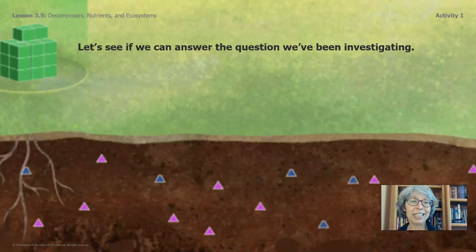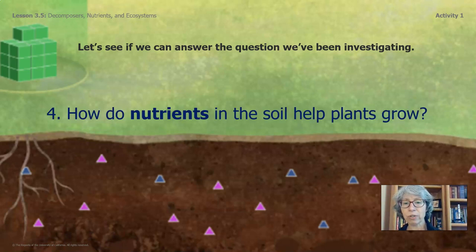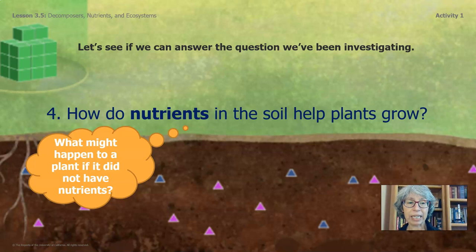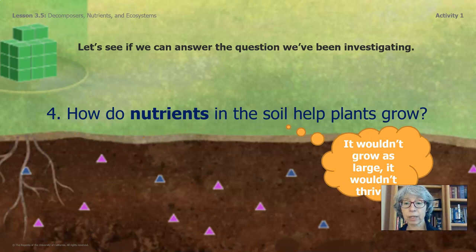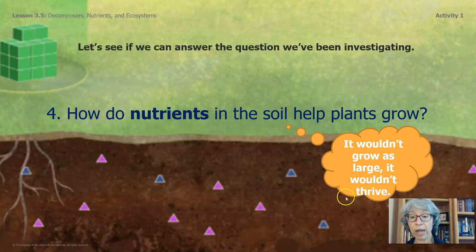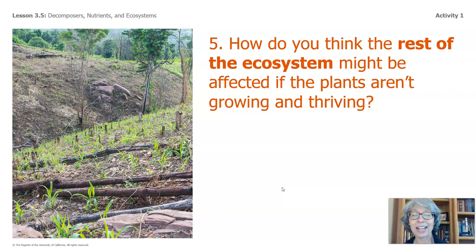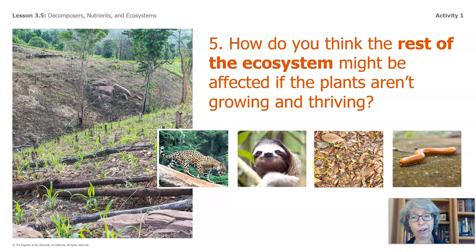Let's see if we can answer the question we've been investigating: how do nutrients in the soil help plants grow? What might happen to a plant if it did not have nutrients? It wouldn't grow as large and it wouldn't thrive. So how do you think the rest of the ecosystem might be affected if plants aren't growing and thriving? We know that everything in the ecosystem is connected. If one part of the ecosystem isn't growing and thriving, what do we know about the other parts?